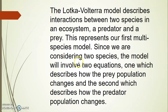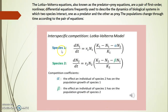Since we are considering two species, the model will involve two equations: one which describes how the prey population changes, and the second which describes how the predator population changes. The Lotka-Volterra equations, also known as predator-prey equations, are a pair of first-order non-linear differential equations frequently used to describe the dynamics of a biological system in which two species interact — one as a predator and another as a prey.